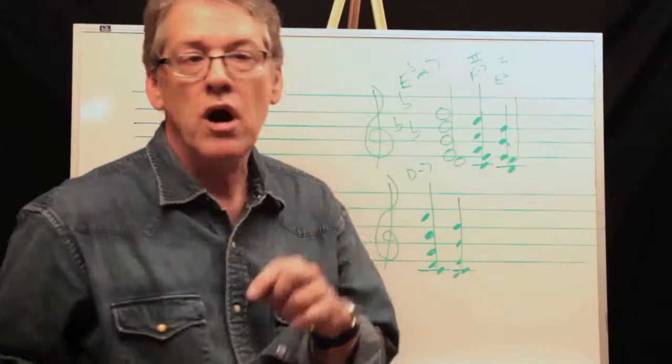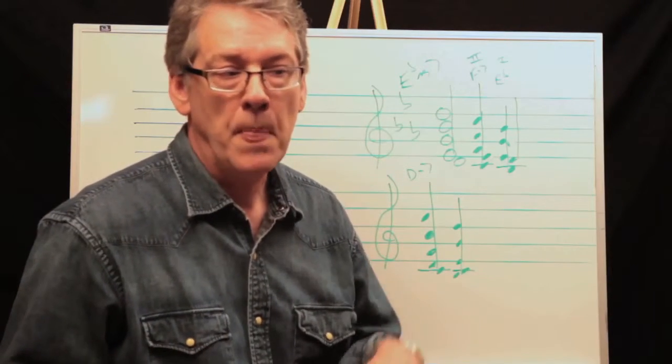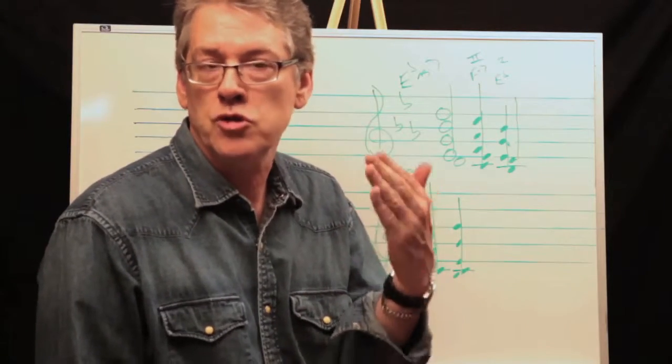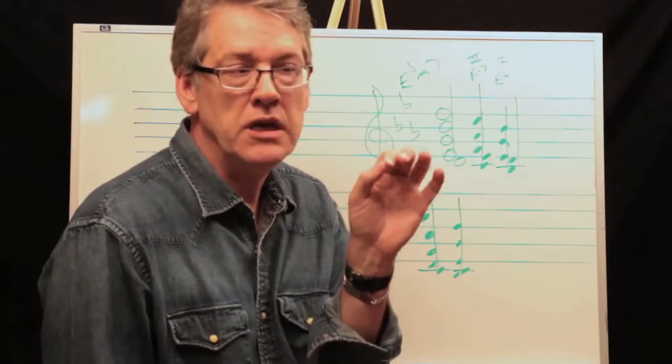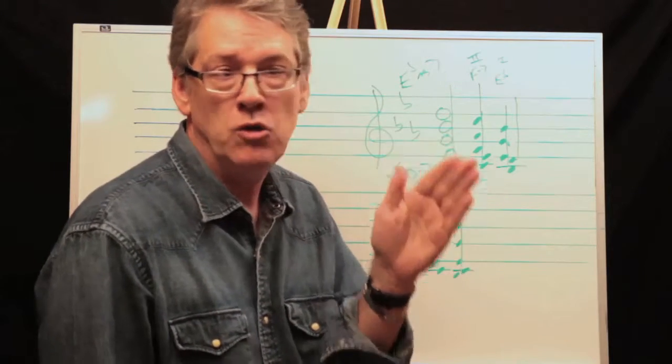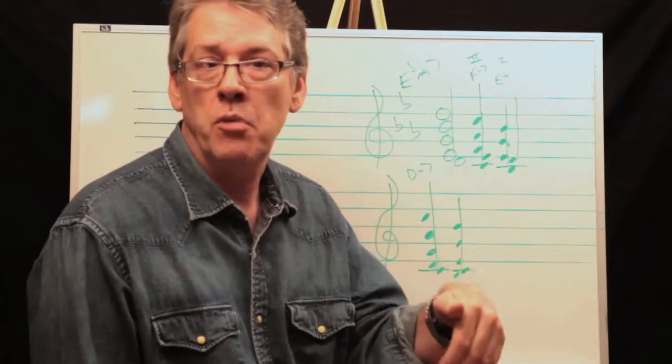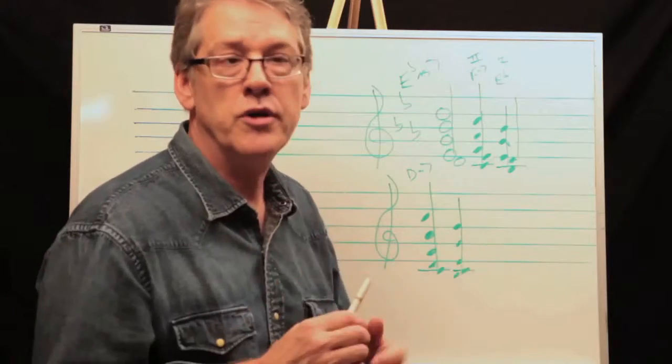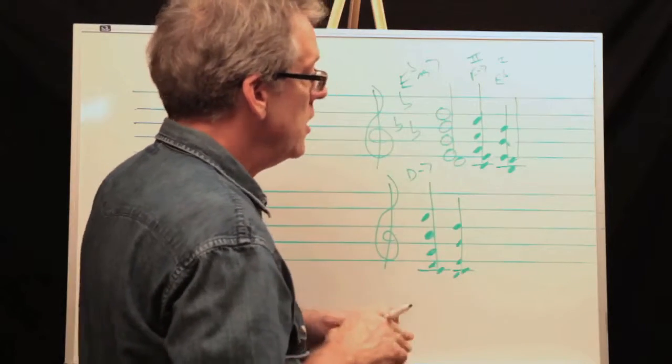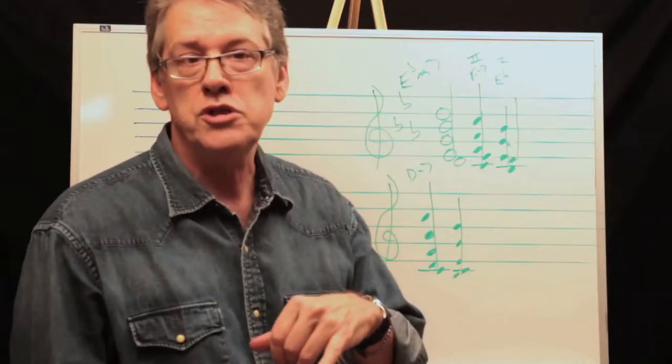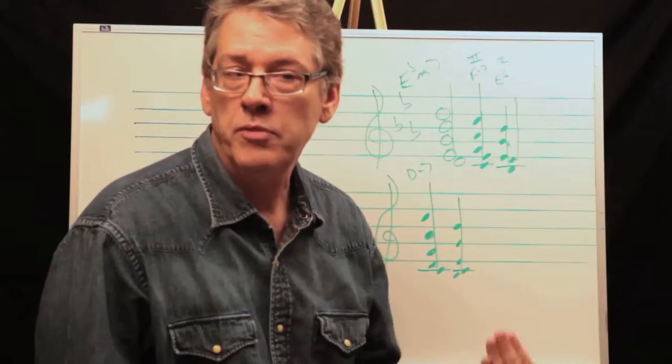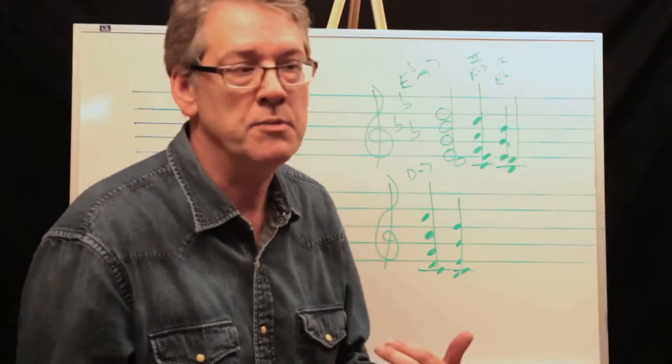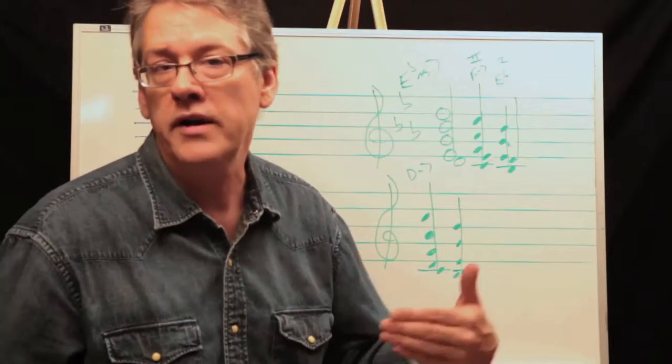And keep in mind that what's defining the bar is the chord that happens on the strong beat. The strongest beat of a bar is beat one, the downbeat of the bar. The second strongest beat is three. So one and three are your strongest beats.